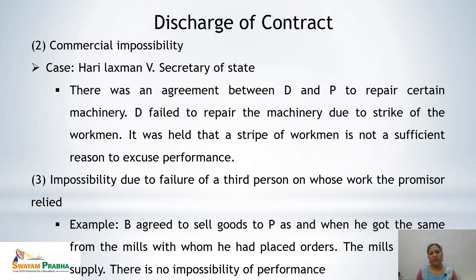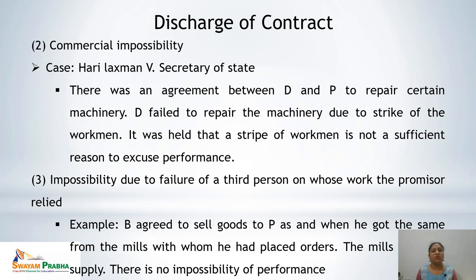Second exception is commercial impossibility. When the contract is impossible to perform due to some commercial reasons, that is commercial impossibility. The leading case is Hari Lakshman v. Secretary of State, where D failed to repair certain machinery due to a strike of workmen. It was held that a strike of workmen is not a sufficient reason to excuse performance, as the person could hire other workers to perform the repair — so commercial impossibility does not lead to discharge.